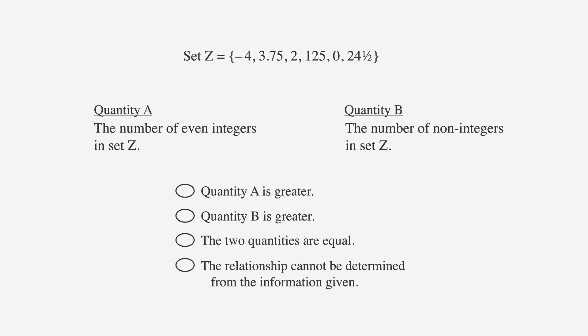Now let's look at integers in a quantitative comparison problem. Here we see that set Z is a group of numbers consisting of negative 4, 3.75, 2, 125, 0, and 24 and one half. Quantity A on the left includes the number of even integers in set Z. Quantity B on the right includes the number of non-integers also in set Z.